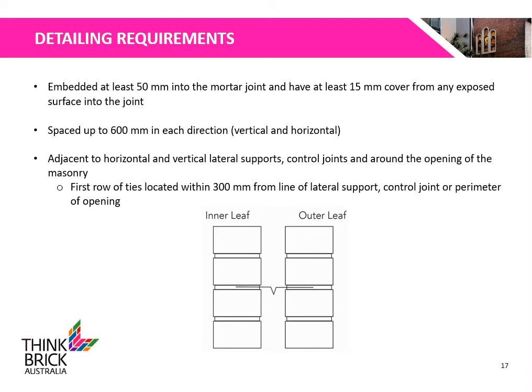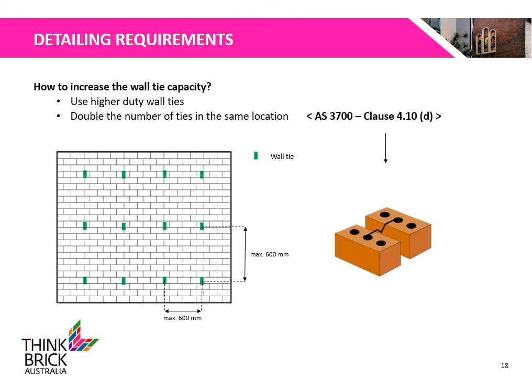For wall ties, specific detailing requirements shall be met. They shall be embedded at least 50mm into the mortar joint and have at least 15mm of cover from any exposed surface. They shall be spaced up to 600mm in each direction, and shall be adjacent to horizontal and vertical lateral supports, control joints, and around openings of the masonry. To increase the wall tie capacity, we can use higher duty wall ties, or we can double the number of wall ties in the same location, as shown in the diagram.